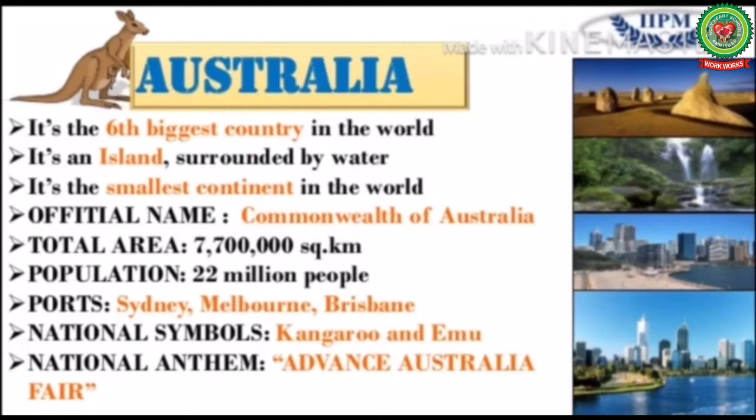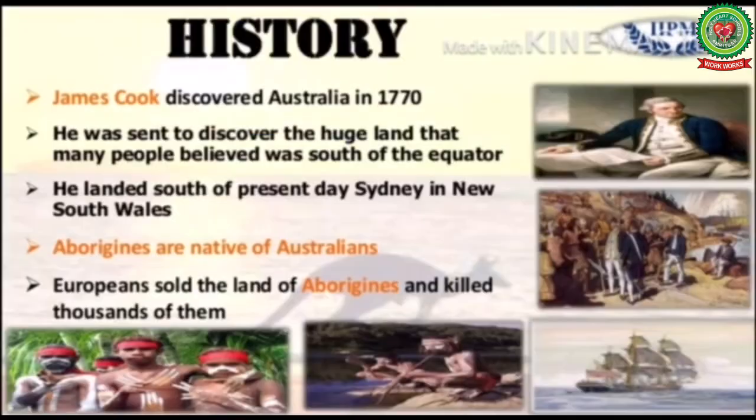The national symbols of Australia are the kangaroo and the emu. The national anthem of Australia is 'Advance Australia Fair.' Let's now start with the historical overview of Australia.